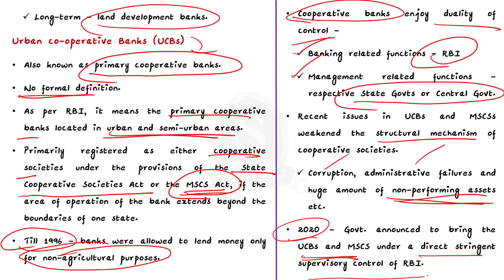RBI is now imposing direct stringent supervisory control on these cooperative banks. In this discussion we saw about cooperative societies, cooperative banks, rural cooperative banks including short-term and long-term funding, urban cooperative banks, and finally the issues surrounding cooperative banks.